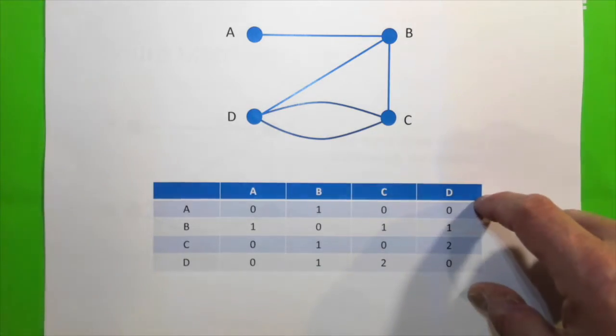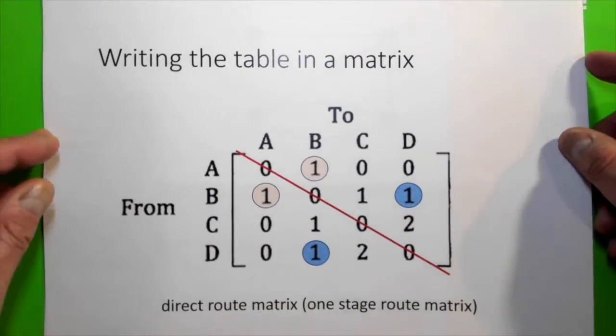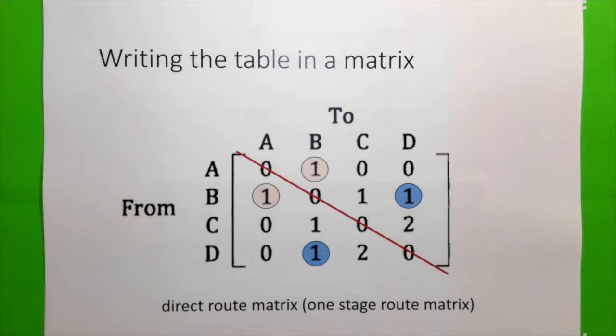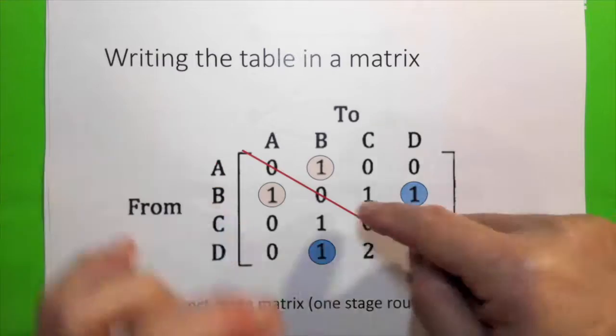So, we can actually change that table into a matrix. And this is the matrix. Now, straight away we can tell that it's a square matrix. It's a 4 by 4 matrix. It's 4 rows and 4 columns.